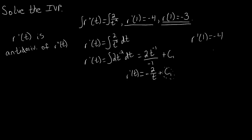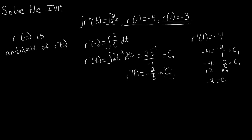So negative 4 is going to equal negative 2 over 1 plus c1. Evaluating that, we get negative 4 equals negative 2 plus c1. Adding 2 to both sides: negative 4 plus 2 gives us negative 2, so c1 equals negative 2. The specific anti-derivative that satisfies this initial condition is negative 2 over t minus 2, and this is our first derivative for this given question.